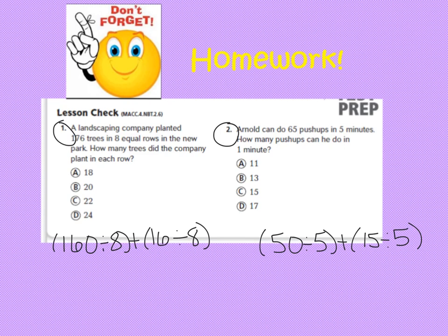For homework tonight, you are working on page 80, and you are only doing numbers 1 and 2. Now, for numbers 1 and 2, I've already broken up the division problems for you. So here, this will help you out here. So make sure for number 1, we're doing 176 divided by 8, and we've broken it up into 160 and a 16. For number 2, you're doing 65 divided by 5, and we've broken up that 65 into a 50 plus a 15. So go ahead and finish these problems and fill in your answers, and I'd like to see the work along with that. And remember, you're only doing numbers 1 and 2 tonight.